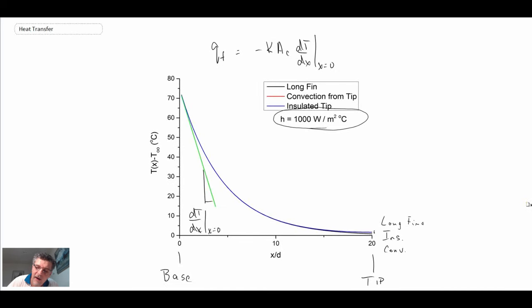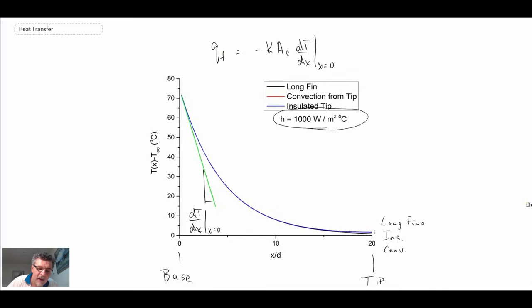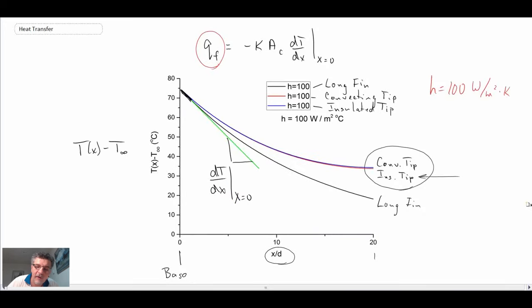And so with the higher convective environment at 1000, we would assume that there would be more heat drawn away. And certainly there is, because the slope is greater. And consequently, through Fourier's law, we would have increased heat transfer.